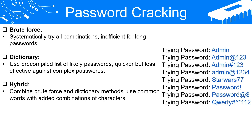Hybrid Attacks. Hybrid attacks combine elements of both brute force and dictionary attacks. In a typical hybrid attack, the attacker might start with a dictionary of common passwords but then add various combinations of characters to the beginning or end of these dictionary words. For instance, if 'password' is a dictionary word, a hybrid attack would also attempt 'password1', 'password123', '1password', and so forth. This approach can be more successful because many users create passwords by adding numbers or special characters to common words to meet complexity requirements. Like the dictionary attack, a hybrid attack is faster and more efficient than brute force, but it is still limited by the creativity and complexity of the user's password.